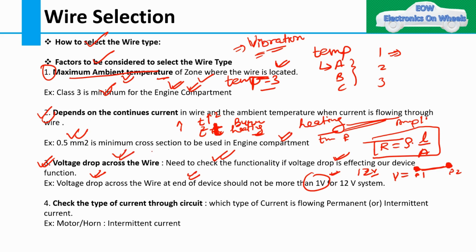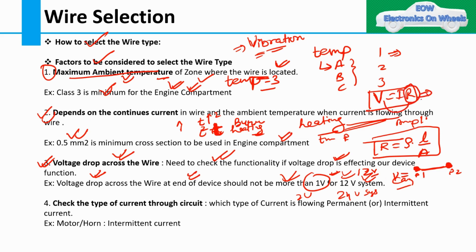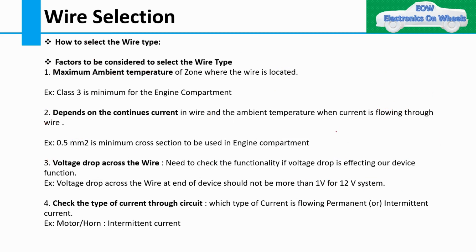If the voltage drop is more than one volt, the signal will be distorted at the device end, which means the component or device will not perform its intended function. This calculation happens in all OEMs. For a 24-volt system, you can take 2 volts as the limit. The voltage drop depends on resistance R — if R is more, voltage drop is more, using V = IR.